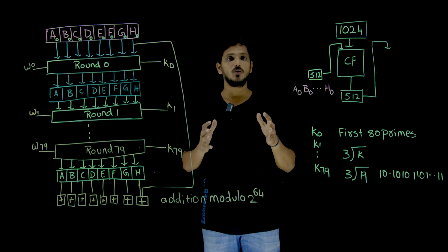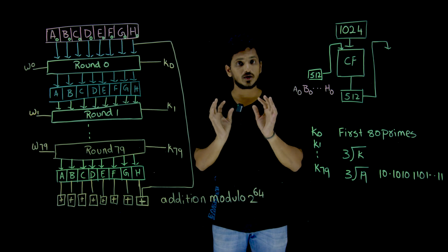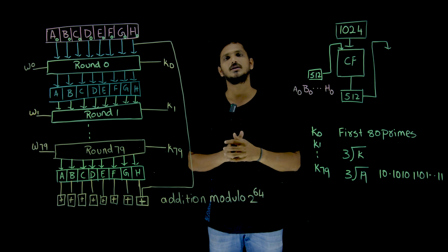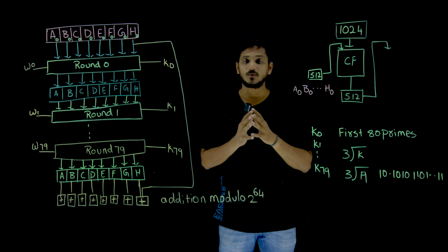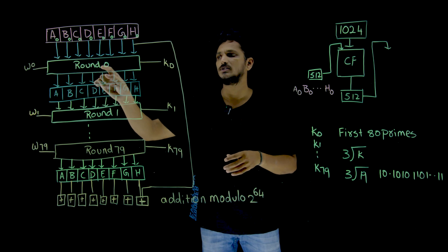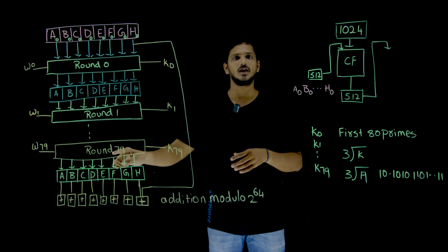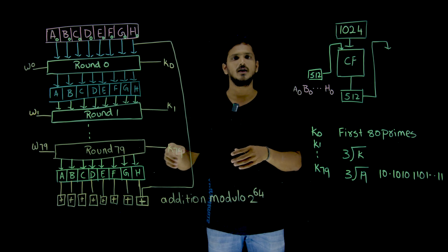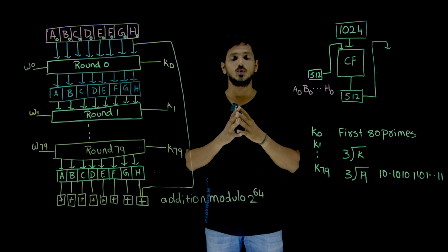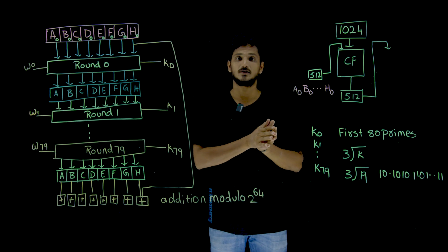This is how the compression function works. This is an overview of the compression function — what happens inside it. And one more point we need to understand: what happens inside round 0, round 1, round 79 — what transformation it is going to do — we are going to understand that in our next class.